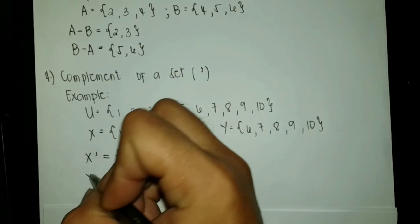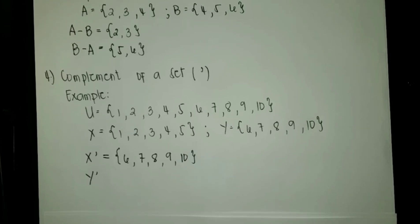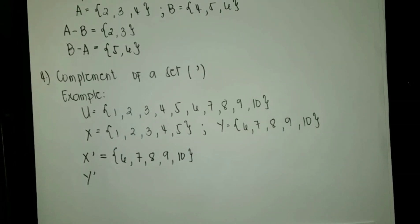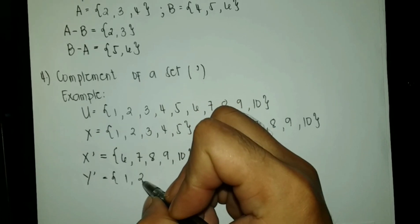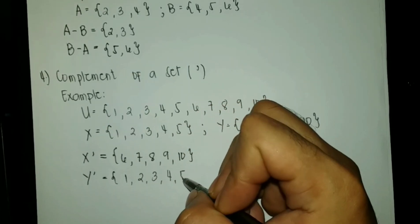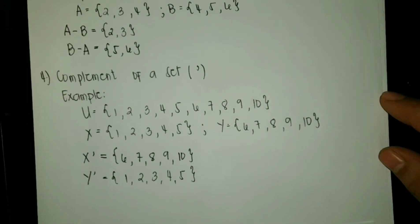Now let us get Y prime, or the complement of set Y. We are going to get the elements that are present on our universal set but not on set Y. So we have the set with the elements 1, 2, 3, 4, and 5. Those are the four operations on sets.